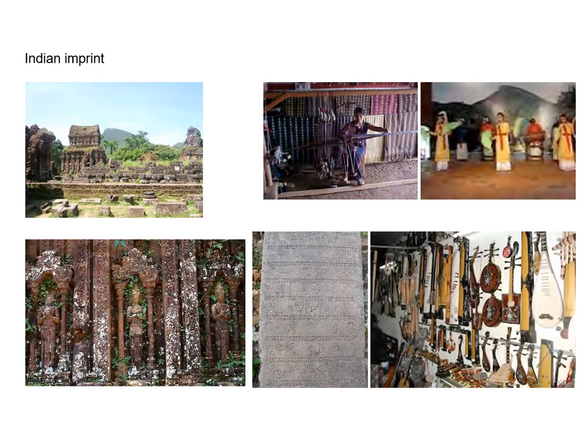The Indian imprint is mainly visible in central Vietnam, where the Champa Kingdom used to be. The Champa Kingdom controlled the spice trade between China, India, Indonesia and Persia, and its culture was influenced by the Hindu belief. Some temples and ruins still exist today. The culture is more evident in music, dance, theatre and textile.